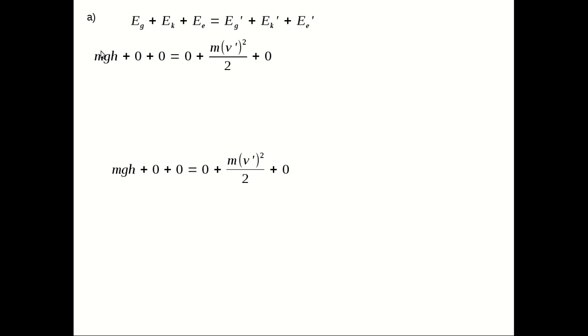Our gravitational potential energy can be found with our formula for gravitational potential energy: m times small g times h. At the start, the cars aren't moving, so the kinetic energy is equal to zero.